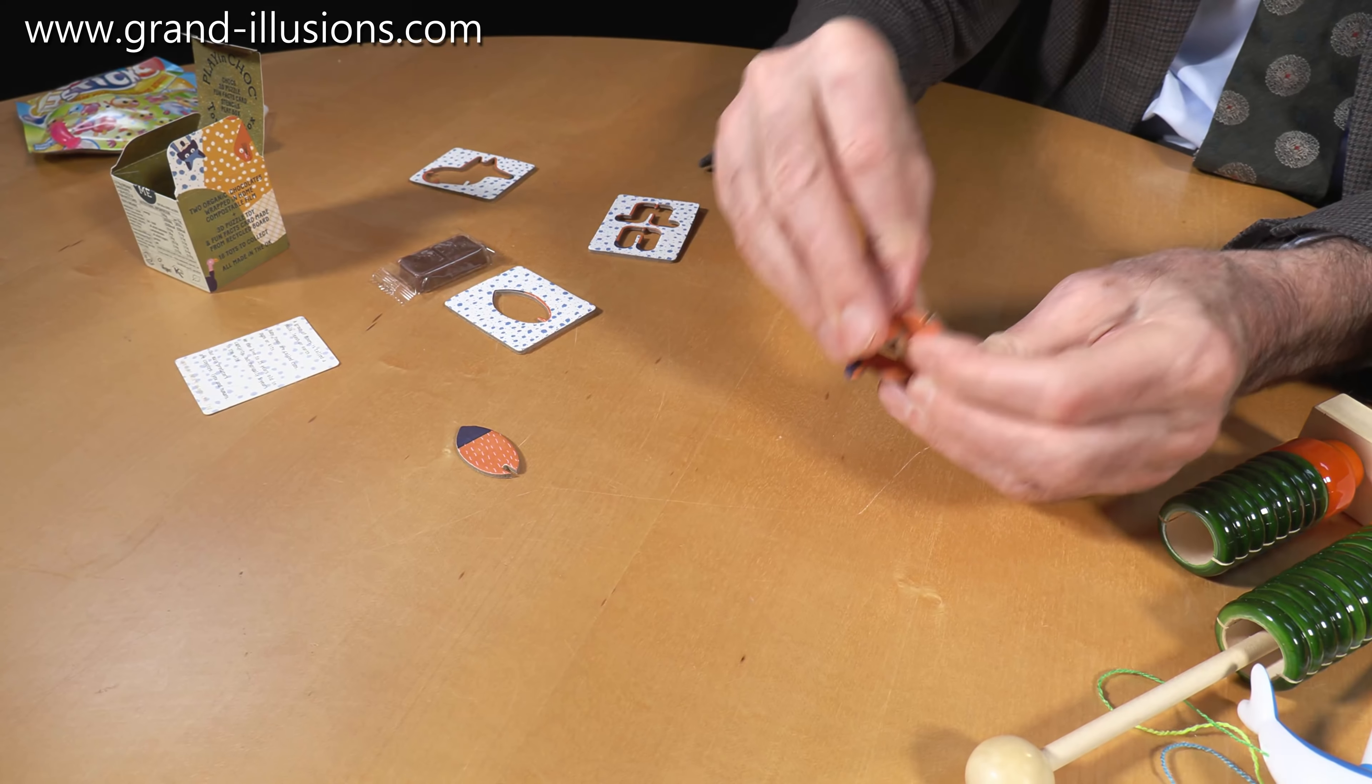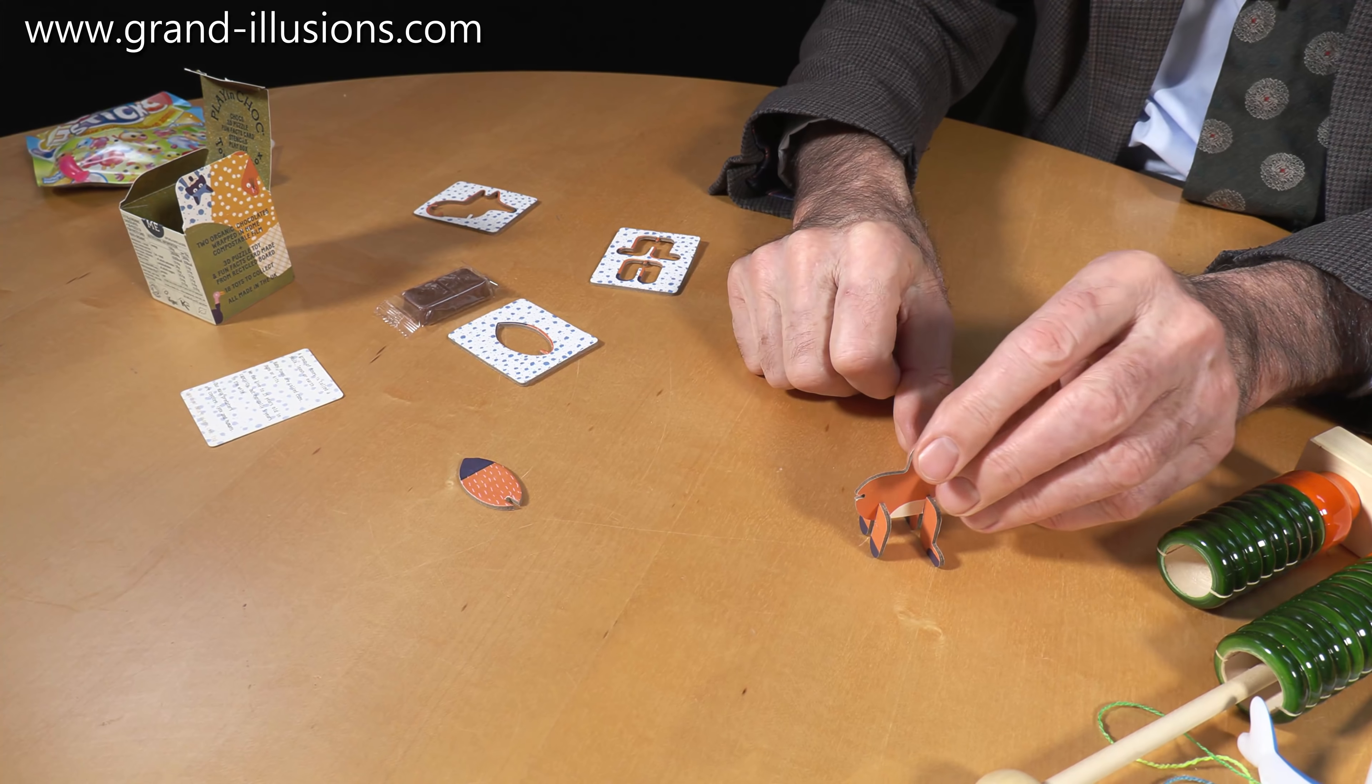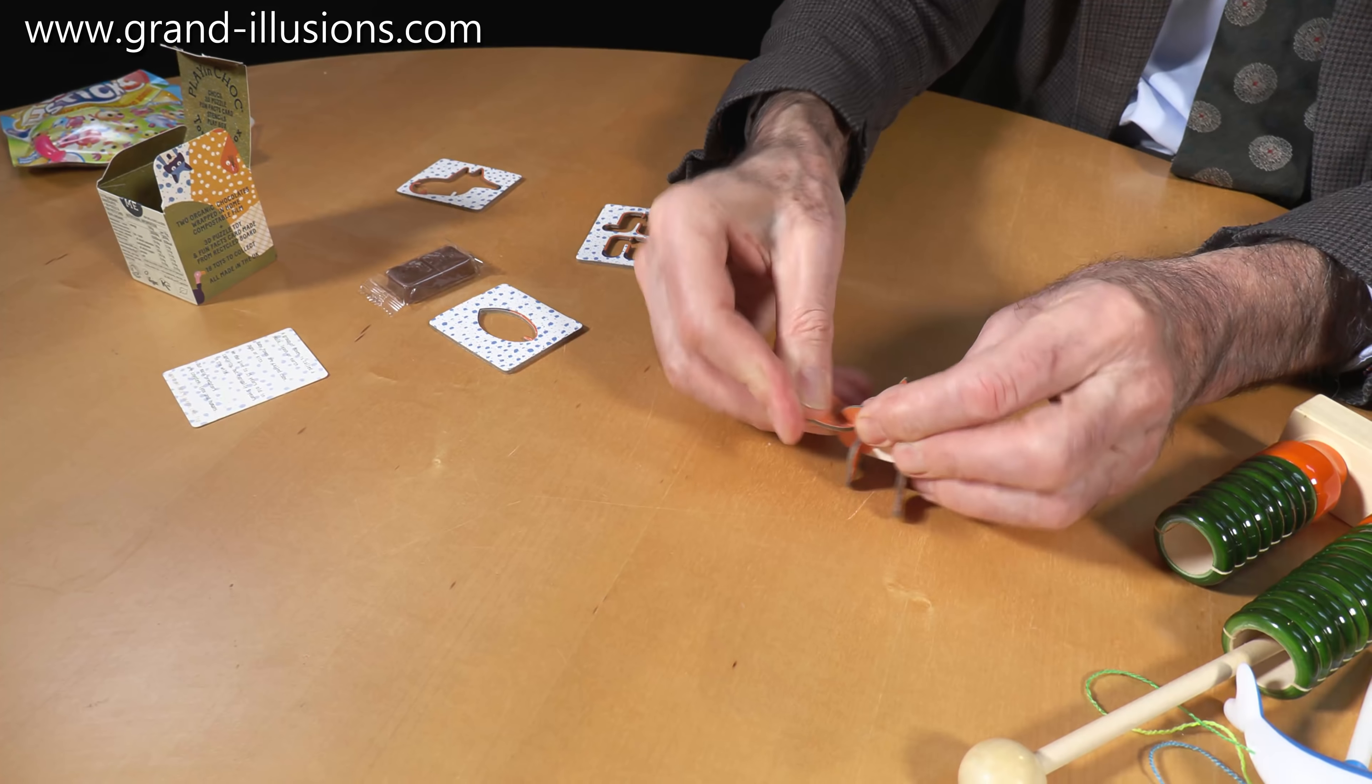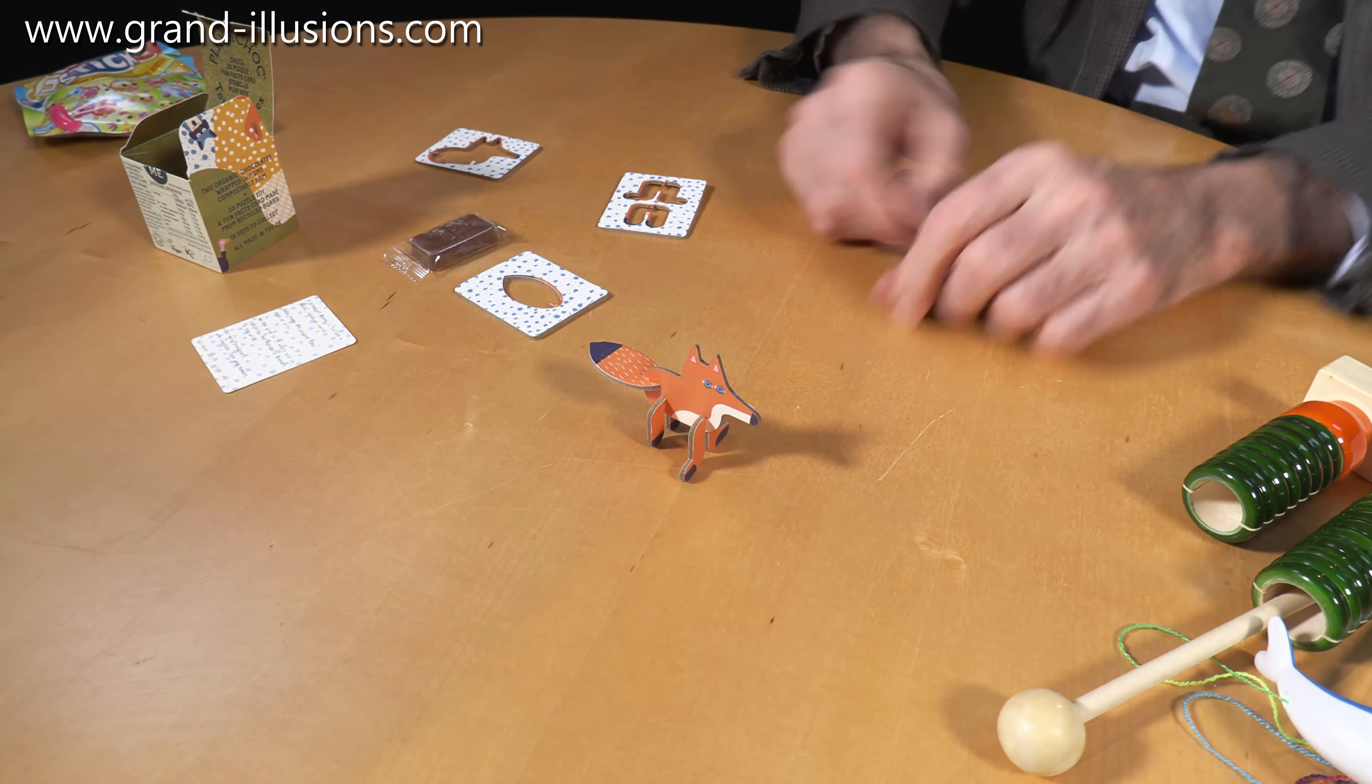There's his back legs, just little U-shaped channels into each other, and then the last one is the tail, and there it is, fully assembled.